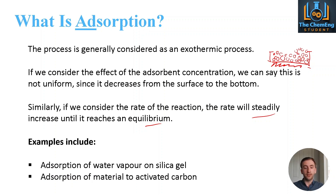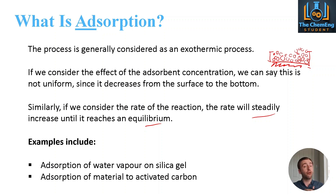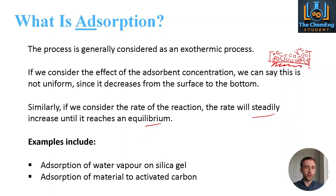Examples of adsorption include the adsorption of water vapor on silica gel — the liquid water would condense on the surface of the gel but would not enter the silica gel itself. Another example is activated carbon, which is used as a catalyst in chemistry and chemical engineering. Activated carbon has adsorption properties because we want reactants to bind to its surface to catalyse the reaction — that's an industrial application of adsorption.